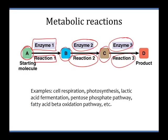The second step of a metabolic pathway will convert B to C using a second enzyme that may do a different reaction, and then from C to D using a third enzyme. You already know some examples of metabolic pathways. Cell respiration is actually a very long metabolic pathway. Photosynthesis is a long metabolic pathway. Lactic acid fermentation, where we produce lactic acid in our muscles, is a fairly short metabolic pathway.